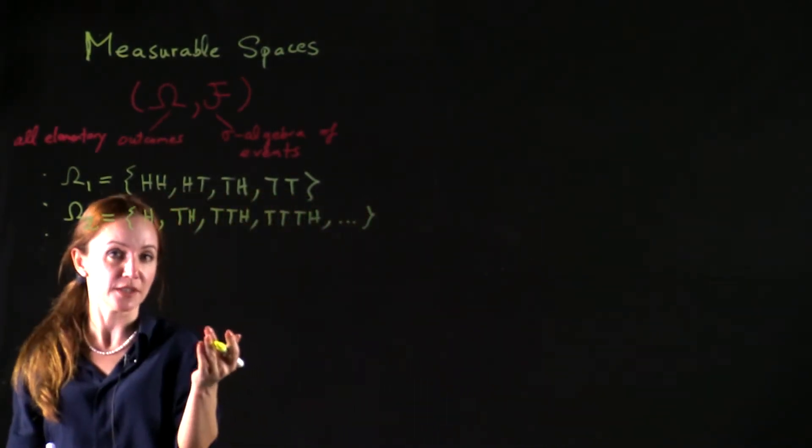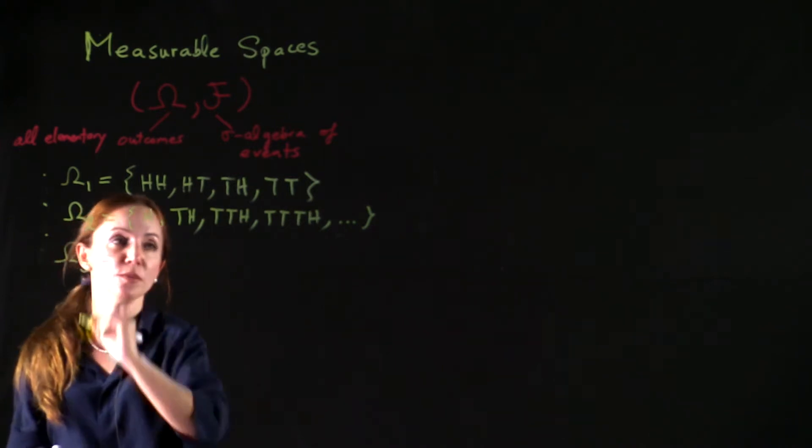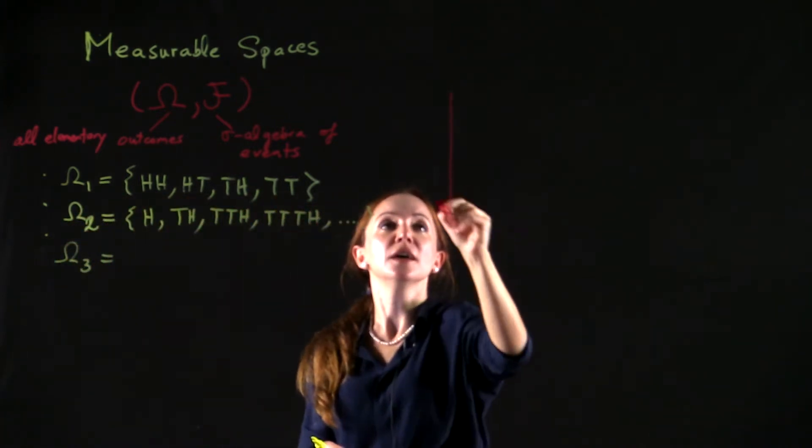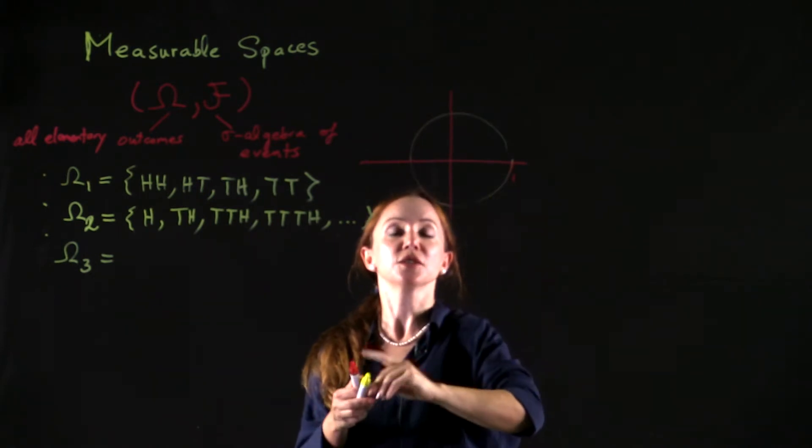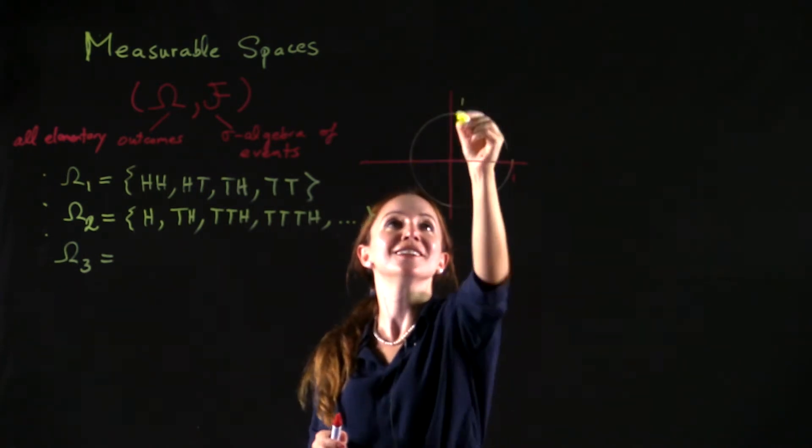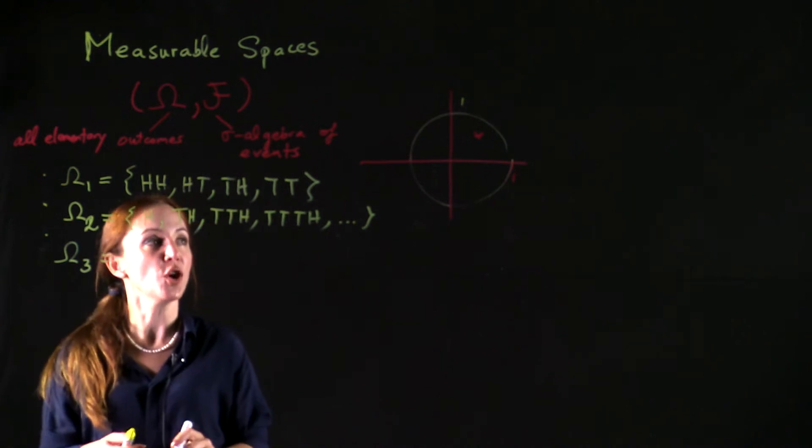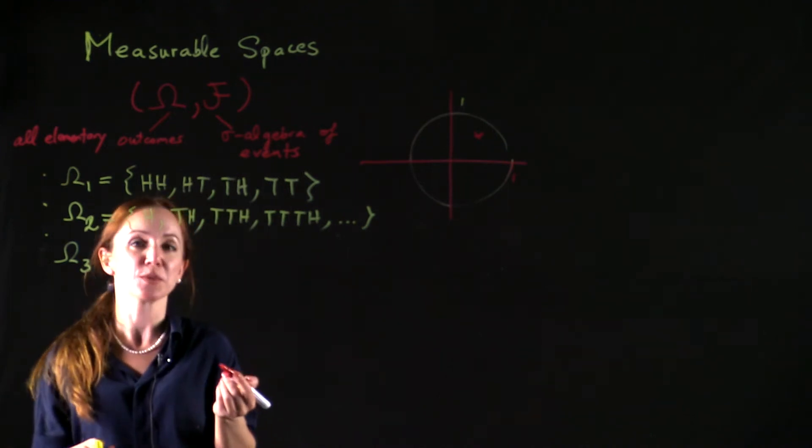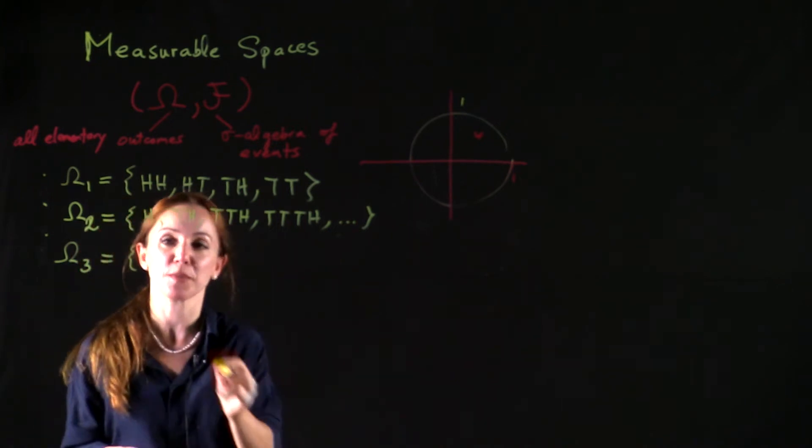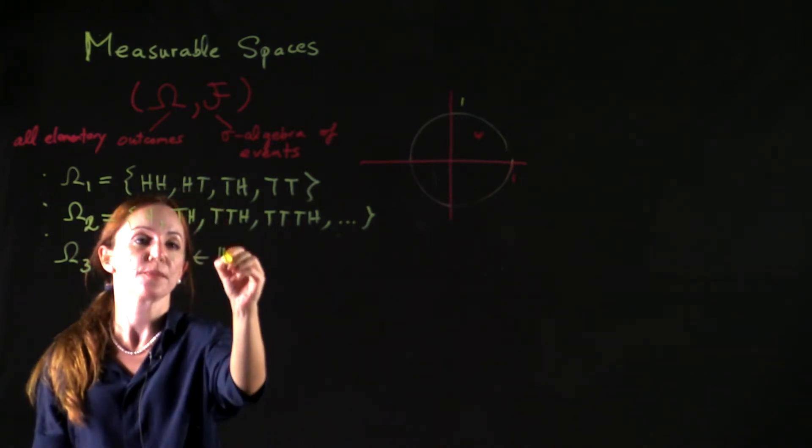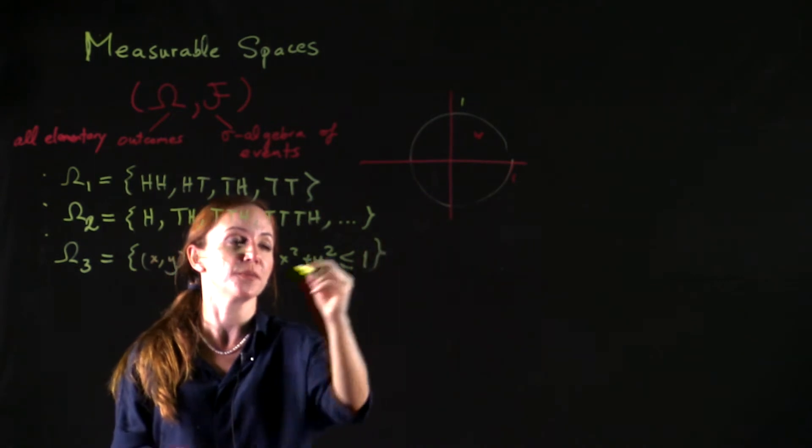In some other cases, the sample space is going to have an uncountable number of elements. For example, suppose I am choosing a point at random inside this circle. Suppose it's a unit circle, and I pick a point at random, uniformly at random. In this case, the sample space is a region of R2, and elements of the sample space are ordered pairs x, y, where x squared plus y squared is less than or equal to 1.